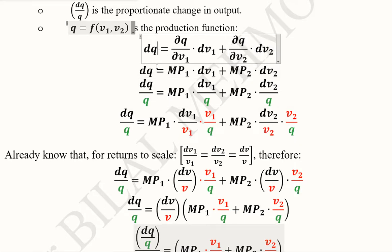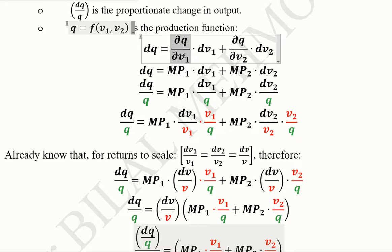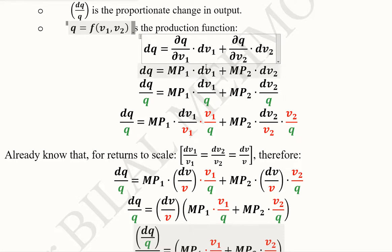This is the process of taking the total differential, which we have calculated here. The derivative of the production function with respect to one of the inputs gives us the marginal product with respect to that input, which in this case is v1, so we write mp1. This term remains the same. Similarly, this term can be written as the marginal product of the second input v2, so we write mp2, and that term again remains the same.